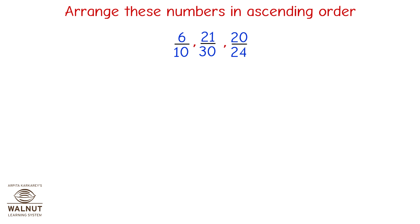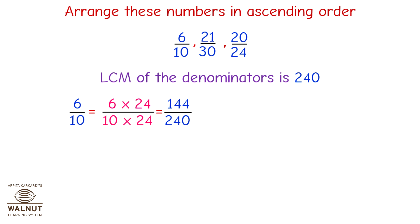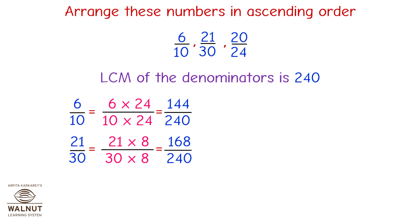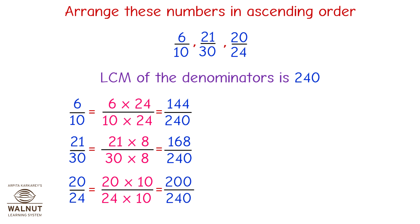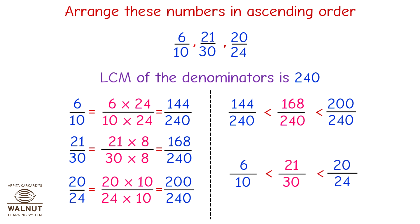Arrange these numbers in ascending order: 6 upon 10, 21 upon 30, 20 upon 24. LCM of the denominators is 240. 6 upon 10 equals 144 upon 240. 21 upon 30 equals 168 upon 240. 20 upon 24 equals 200 upon 240. Therefore, 144 upon 240 is less than 168 upon 240 is less than 200 upon 240. So 6 upon 10 is less than 21 upon 30 is less than 20 upon 24.